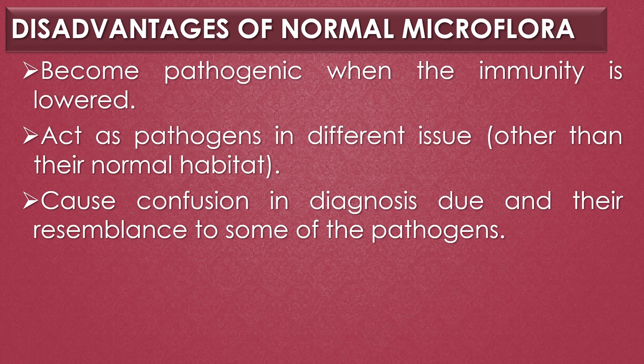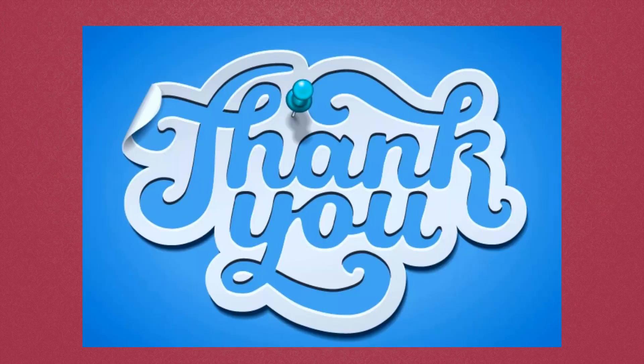Normal microbial flora has three major disadvantages. First, normal microbial flora becomes pathogenic when immunity is lowered. Second, normal microbial flora may act as pathogens in tissues other than their normal habitat — for example, normal flora of the intestine may cause urinary tract infections. Third, they cause confusion in diagnosis due to their ubiquitous presence in the body and their resemblance to some pathogen populations. Dear viewers, thank you for your support.